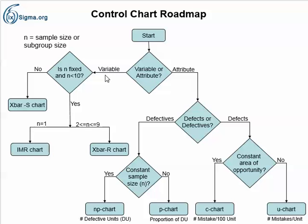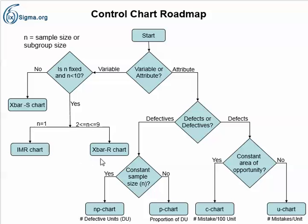So, let's assume we've got variable data. The next question is: is N fixed and is it less than 10? We're talking here about sample size or subgroup size. When the answer to both of those questions is no, then we use an X-bar and standard deviation chart. If the answer is yes, the next question is whether N equals 1 or is between 2 and 9 inclusive. If it's 1, we use an individuals and moving range chart — IMR chart. And if it's between 2 and 9 inclusive, it's an X-bar and range chart.